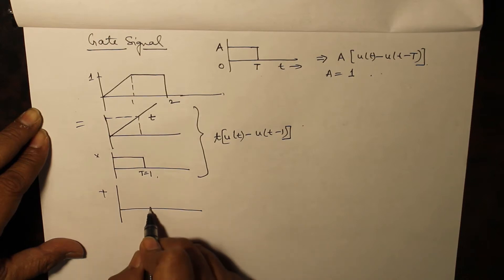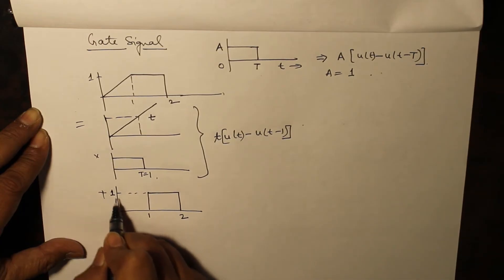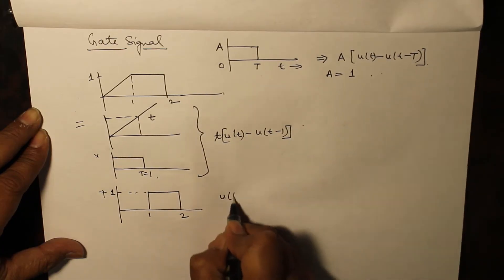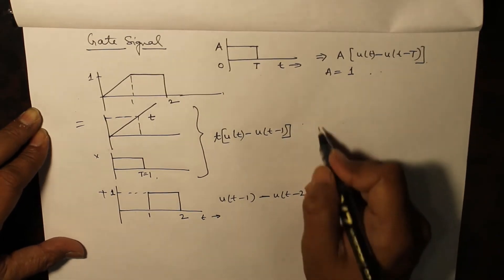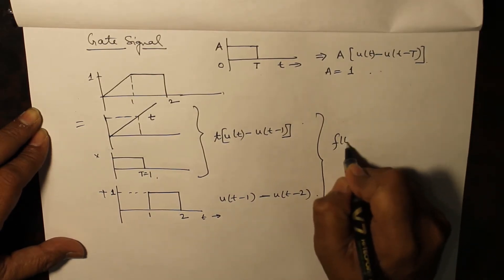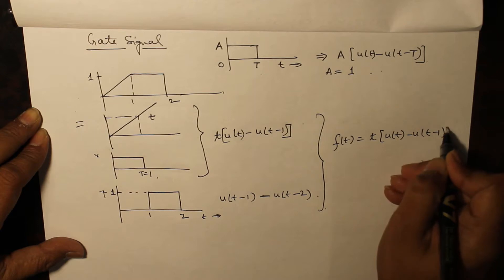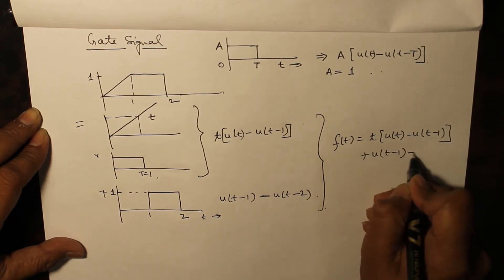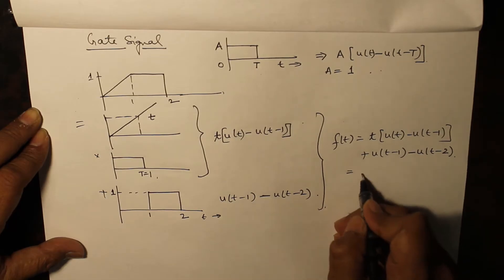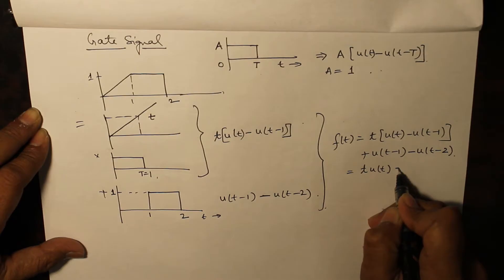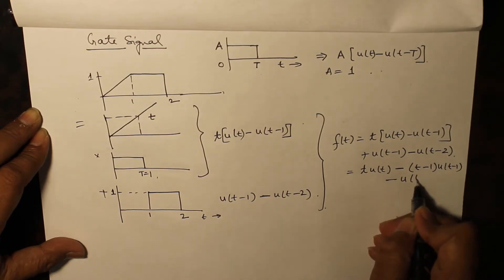Thereafter we introduce another gate from 1 to 2. The magnitude here is incidentally 1, so the next gate is u(t minus 1) minus u(t minus 2). Adding both of these we get f(t) as t·u(t) minus u(t minus 1) plus u(t minus 1) minus u(t minus 2), which can be further solved as t·u(t) minus (t minus 1)·u(t minus 1) minus u(t minus 1).